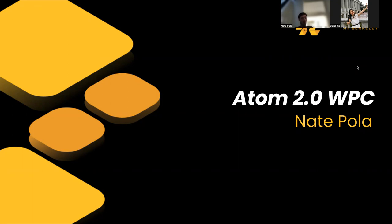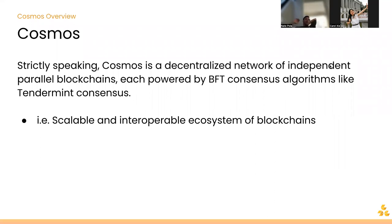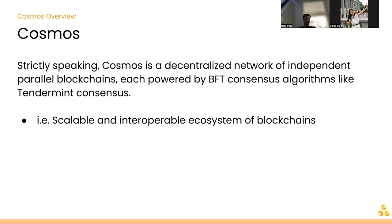I'm going to go over a few general components of Cosmos to start. Where they describe themselves: Cosmos is a decentralized network of independent parallel blockchains, each powered by BFT consensus algorithms like Tendermint. You can think of it as a consortium of blockchains, a web of different blockchains, and Cosmos works to create ways to connect each chain with other ones. There are three main layers: the application, network, and consensus layers.